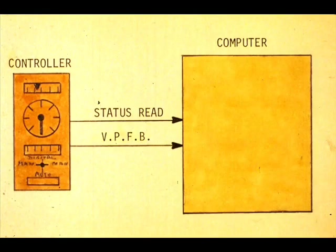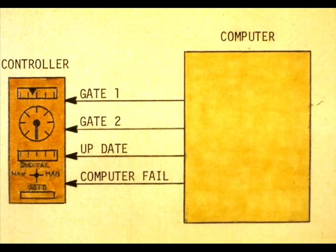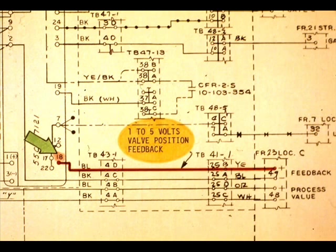The next signals we will discuss are those signals that go from the controller to the computer and the signals that go from the computer to the controller. The 4 to 20 milliamp output signal is internally converted to 1 to 5 volts.